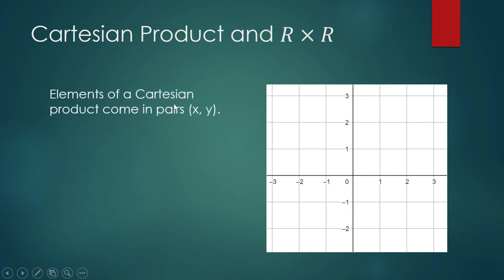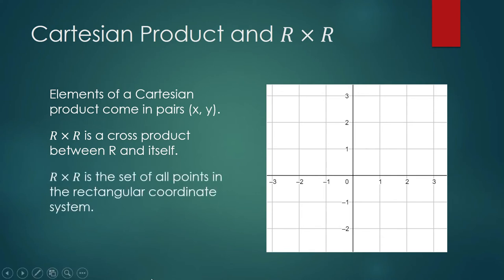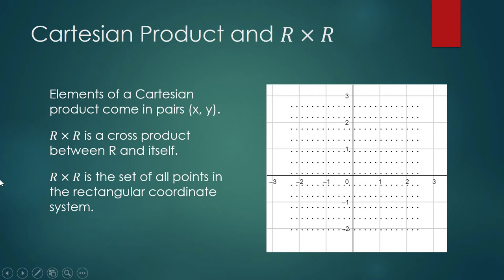The elements of a Cartesian product come in pairs (x,y). X is your first coordinate and Y is the second coordinate. R cross R is a cross product between R and itself. Visually, we can look at R cross R as the set of all points in your rectangular coordinate system. All points here on your plane correspond to the set of elements contained in R cross R.